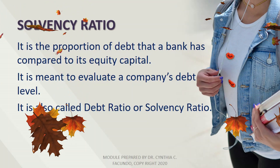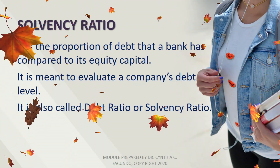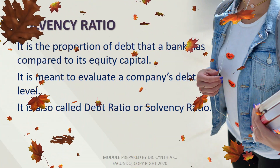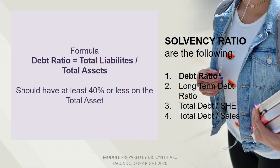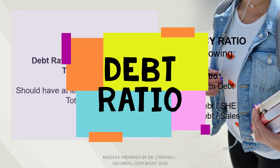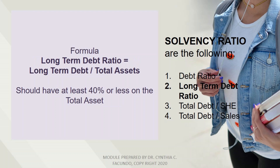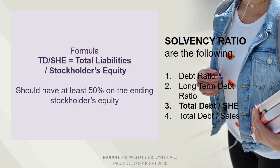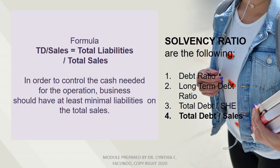Next we have the solvency ratio. Solvency ratio is the proportion of debt that a company has compared to its equity capital, used to evaluate a company's debt level. It is also called the debt ratio, solvency ratio, or leverage ratio. The debt ratio formula is: total liabilities over total assets; the result should be 40% or less. Long-term debt ratio equals long-term debt over total assets; the result should also be 40% or less. Total debt over stockholders' equity equals total liabilities divided by stockholders' equity; the result should be at least 50% of ending stockholders' equity. Total debt over sales equals total liabilities divided by total sales; businesses should maintain minimal liabilities relative to total sales to control cash needed for operations.